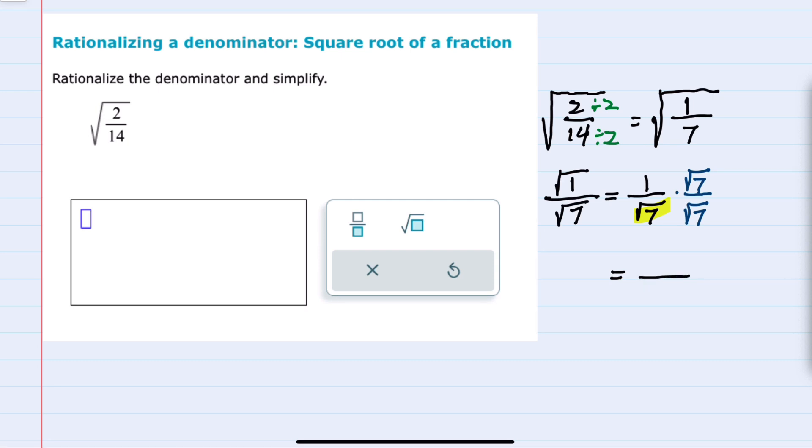And the reason we would do that is because now in the denominator I have the square root of 7 times 7. That is the square root of 49, and you may already recognize that that will simplify.